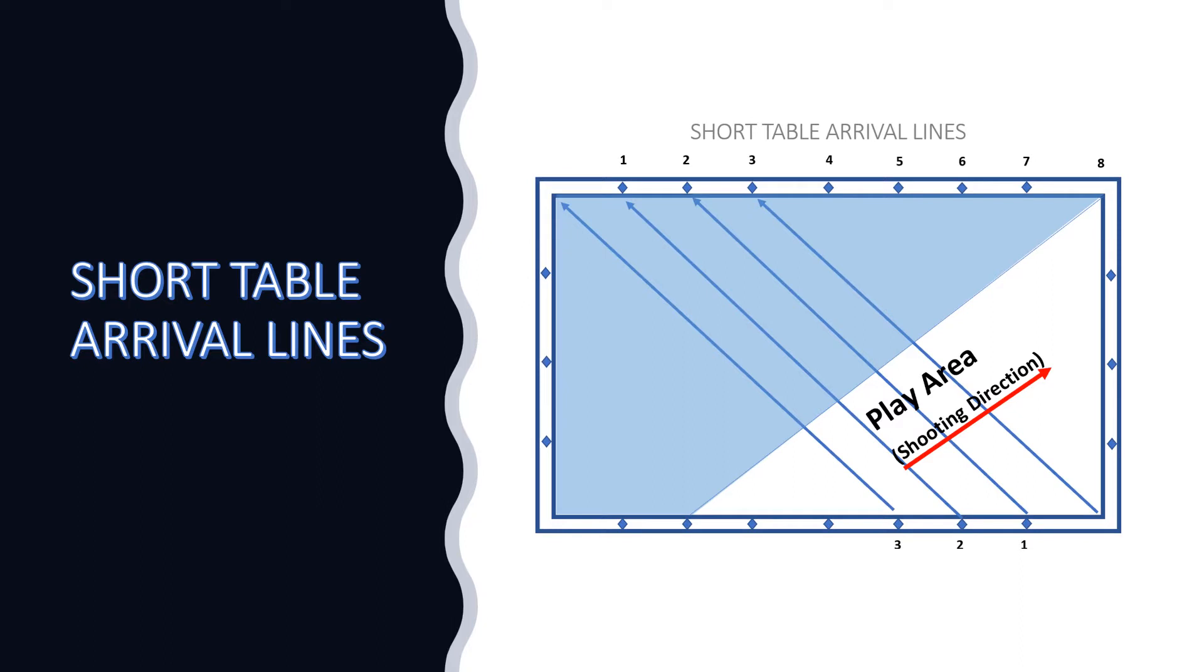Use this diagram to determine the short table arrival lines. When playing on a short table, you will be shooting in the white play area from the bottom left to the top right. Your arrival lines start on the bottom right of the table.